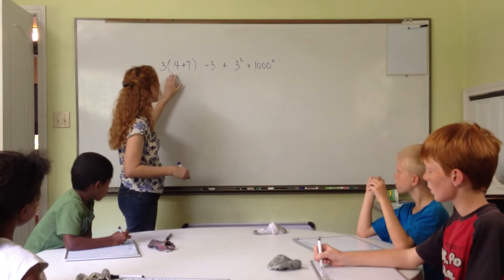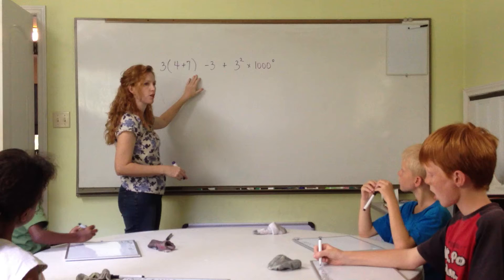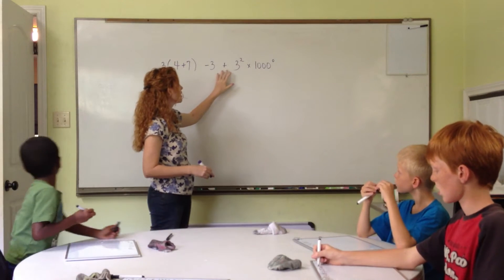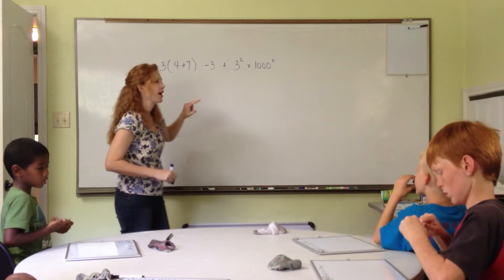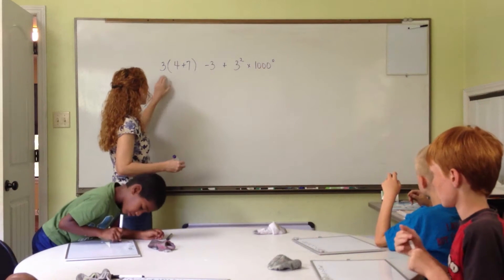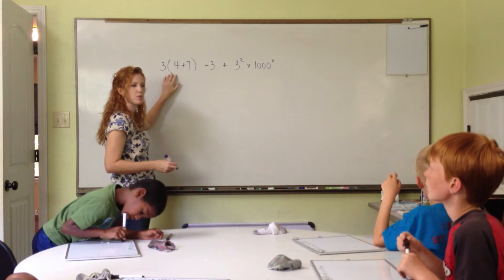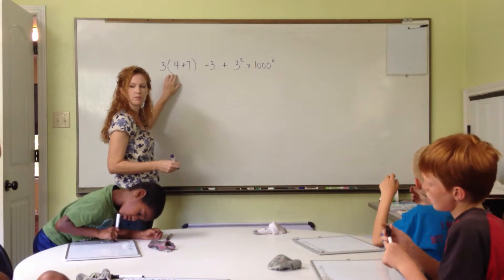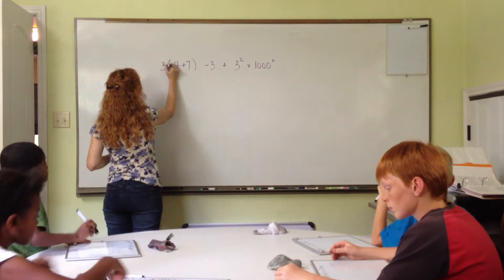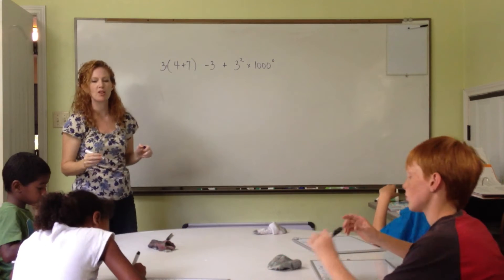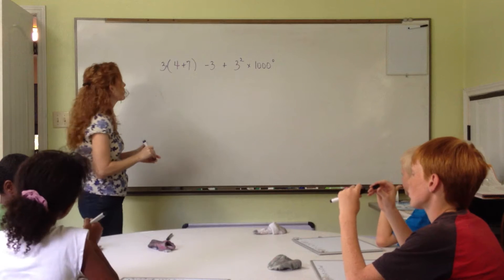What we have is three, open parentheses, four plus seven, close parentheses, minus three, plus three squared, times a thousand to the zero power. And so who knows, what does it mean when I have three and then a parentheses beside it? It actually means times, right? And the time sign is left out. We just write three and then a parentheses, but we know that that's what it means. We're going to multiply there.